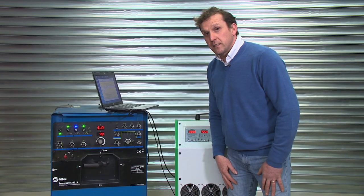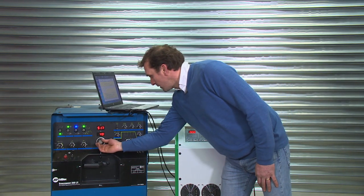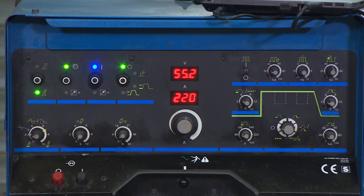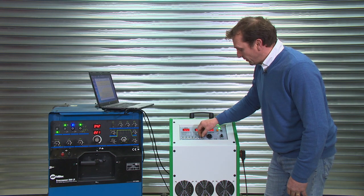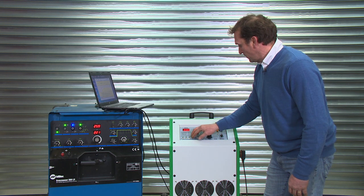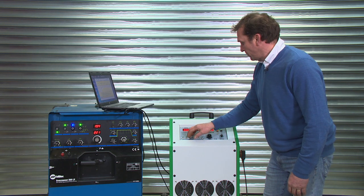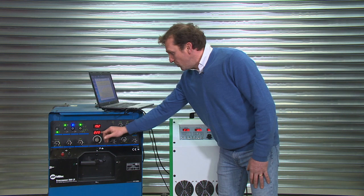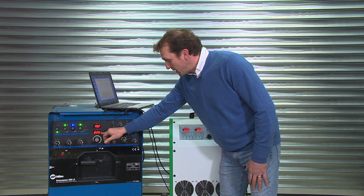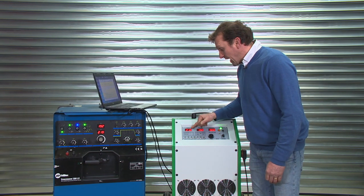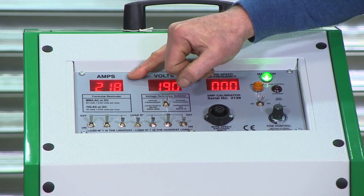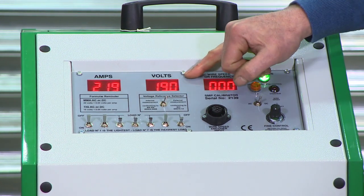The next reading is 220 amps, 18.8 volts. Then we load up the calibrator, looking for 18.8 volts. We're going to enter into the program 220 amps, 19.2 from the welder. And then we'll enter the calibrator reading of 218 amps and 19 volts.